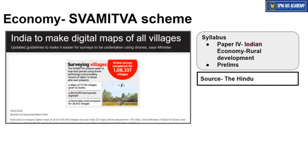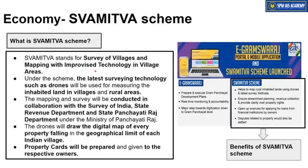The next article is from the economic segment about the Swamitva Scheme, important from Paper 3 Indian economy — especially rural development. The Swamitva Scheme is about digitizing land records of rural areas. Its full form is: Survey of Villages and Mapping with Improvised Technology in Village Areas. Improved technology here means drones — drones are being used to survey rural areas, then mapping is done, and data about who owns which land is digitalized. That is the purpose of the Swamitva Scheme.